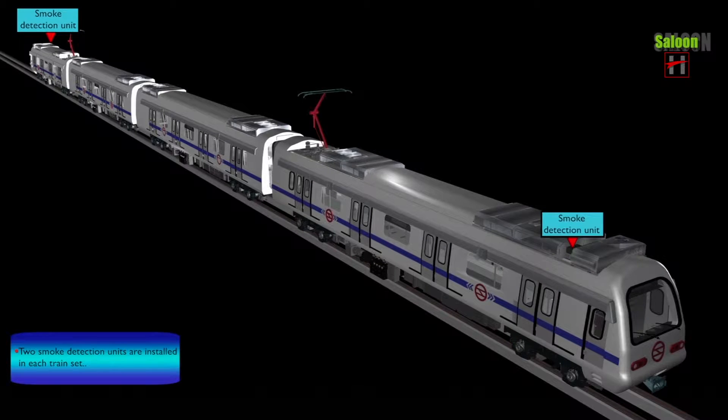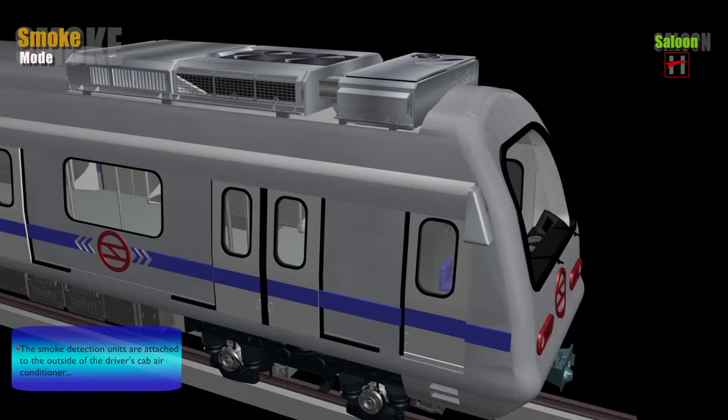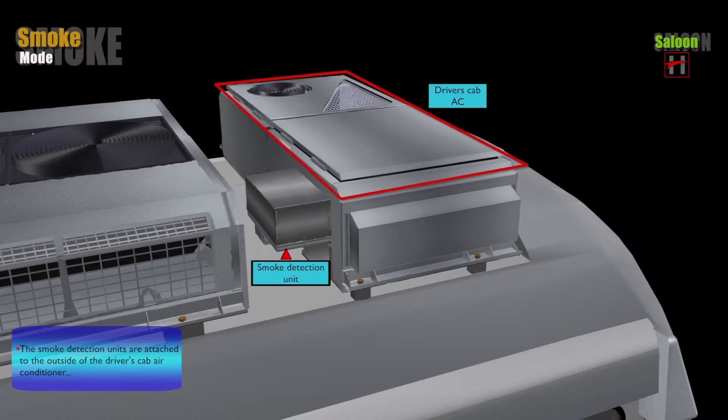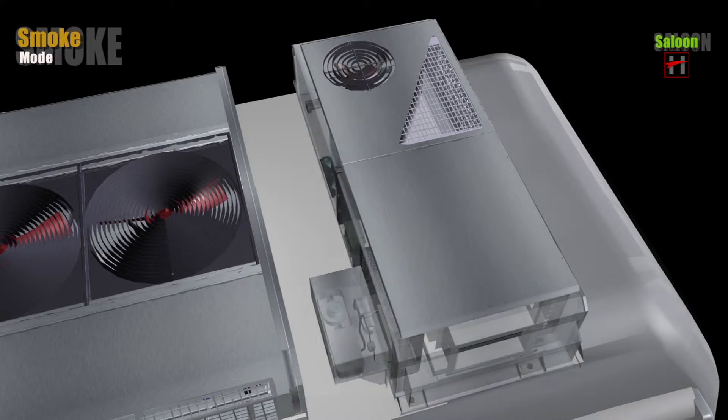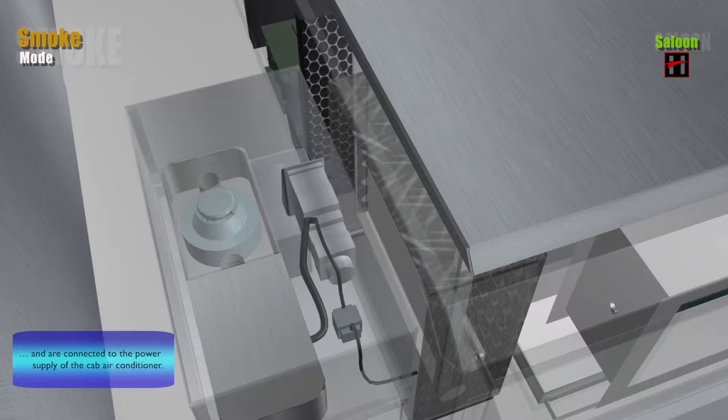Two smoke detection units are installed in each train set, one unit in DT1 car and the second unit in the DT2 car. The smoke detection units are attached to the outside of the driver's cab air conditioner and are connected to the power supply of the cab air conditioner.